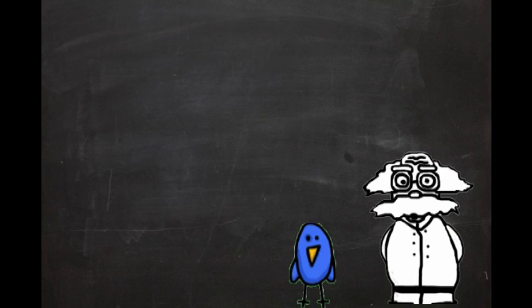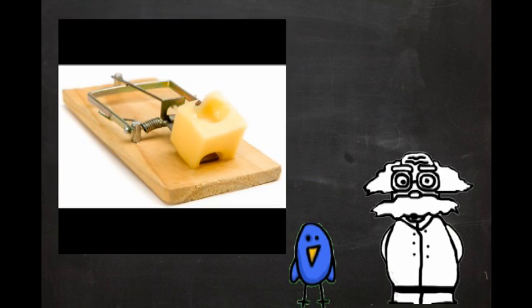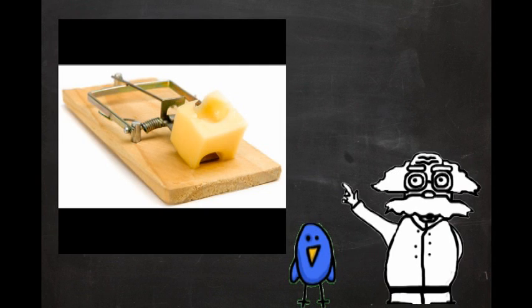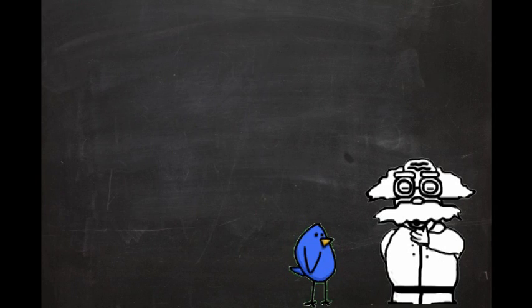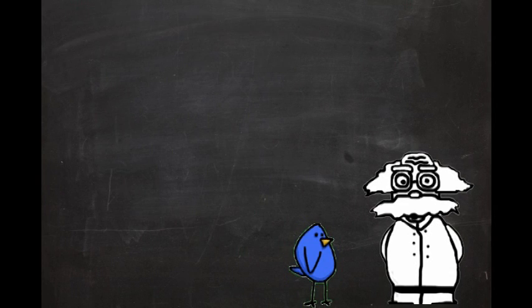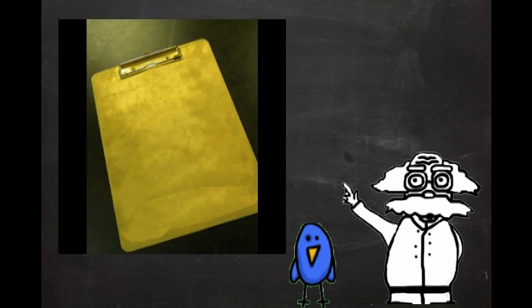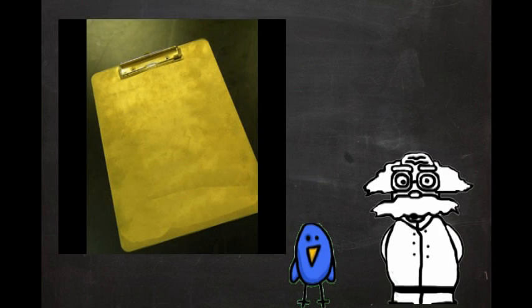A simple example of this concept is a mousetrap. The argument states that if any piece of the mousetrap is missing, the trap is useless and will not function. While it is true that the mousetrap with missing pieces will not function as a mousetrap, however, half of a mousetrap could function as a device that holds paper together like a clipboard.